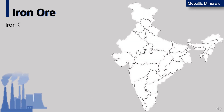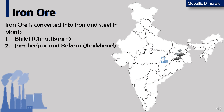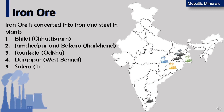Iron ore is converted into iron and steel in plants. Major factories in India are Bhilai in Chhattisgarh, Jamshedpur and Bokaro in Jharkhand, Rourkela in Odisha, Durgapur in West Bengal, and Salem in Tamil Nadu.